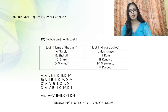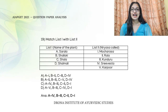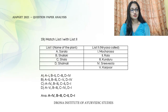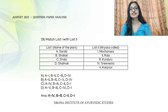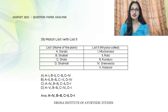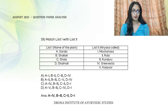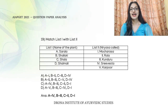The next match the following question has plant names in list one and their Niryasa names in list two. Sarala's Niryasa is called Sriveshtaka. Shalaki's Niryasa is Kunduru. Shala's Niryasa is Srala. Shalmali's Niryasa is Mocharasa.